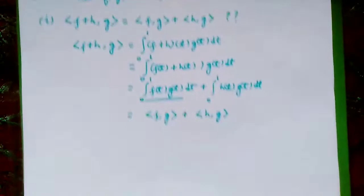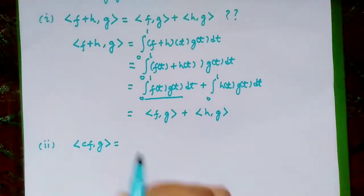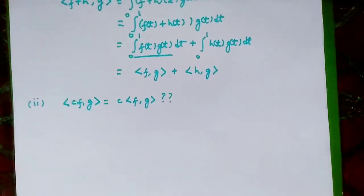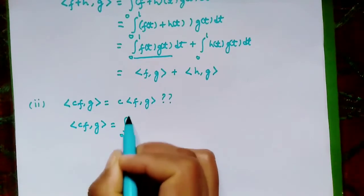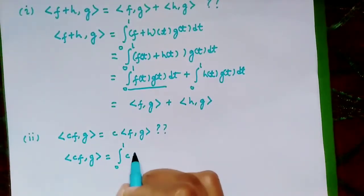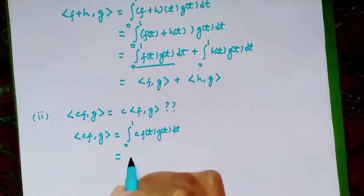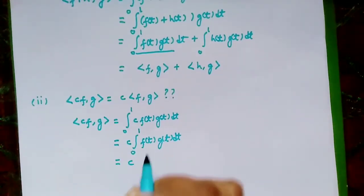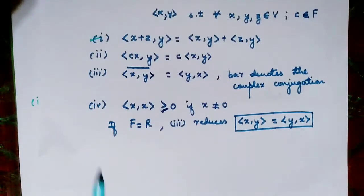Now the second condition: we check whether ⟨CF, G⟩ equals C·⟨F,G⟩. So ⟨CF, G⟩ is defined as the integral from 0 to 1, where in place of F(t) we have C·F(t), then G(t) dt. Since C is a scalar, we can take it out, giving C times the integral from 0 to 1 of F(t)G(t) dt, which is C·⟨F,G⟩. So the second condition is also true.